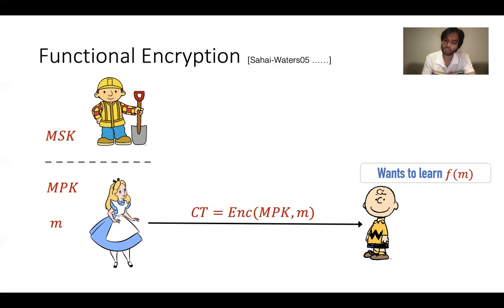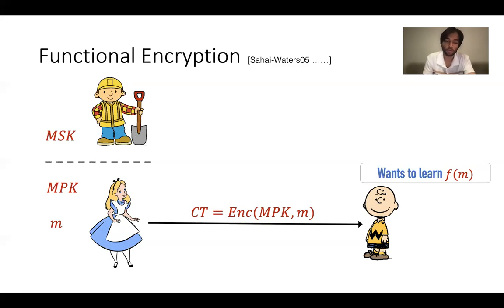But what if we want Charlie to only learn F of M and nothing else about the underlying message? And what if Charlie doesn't want to outsource this computation to Bob, or does not want Bob to be online for this computation? To capture all such interesting scenarios that go beyond the traditional definition of encryption, the notion of functional encryption was devised.